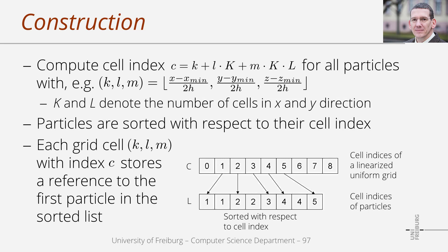There exist different options to access particles in a certain cell. For instance, we could establish references from a list of grid cells to the particle list — for each grid cell we store a reference to the first particle in the sorted list. Here, c is a list of all grid cells and l is the sorted list of particles. We have 9 grid cells and 8 particles, and in the particle list we see the cell index of each particle: two particles in cell 1, two in cell 2, one in cell 3, and so on. We store references at the grid cells pointing to the first particle in the respective cell.